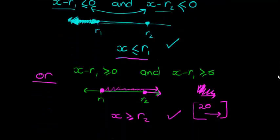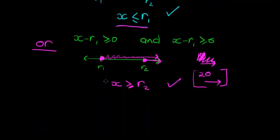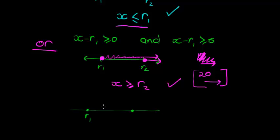So this is my final solution. On the number line: r1 here, r2 there. The first solution is x ≤ r1 — everything to that side — or x ≥ r2 — everything to the other side.